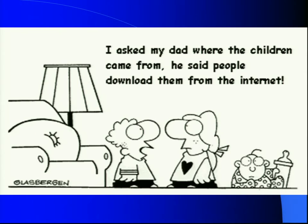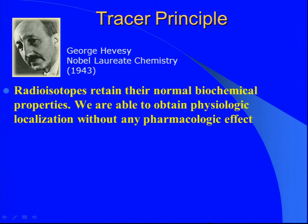Now I'm supposed to talk about history. The tracer principle is essentially what I just described — the whole concept of being able to image an organ with a radioisotope. The important thing is that we can give tiny amounts of these agents for diagnostic purposes, and it doesn't change the body at all. It gets into the normal pathway of metabolism for that organ, and we can take pictures and follow it along — physiologic localization without any pharmacological effect.